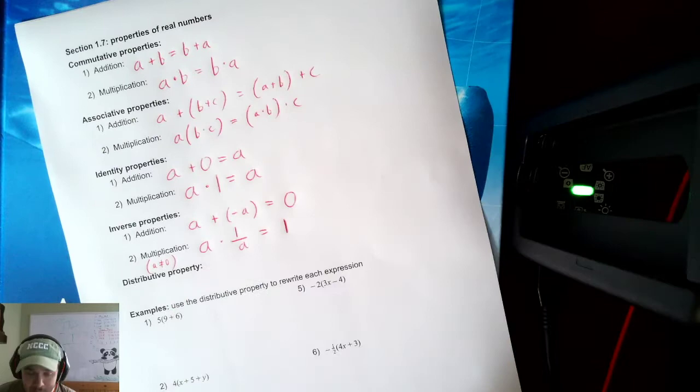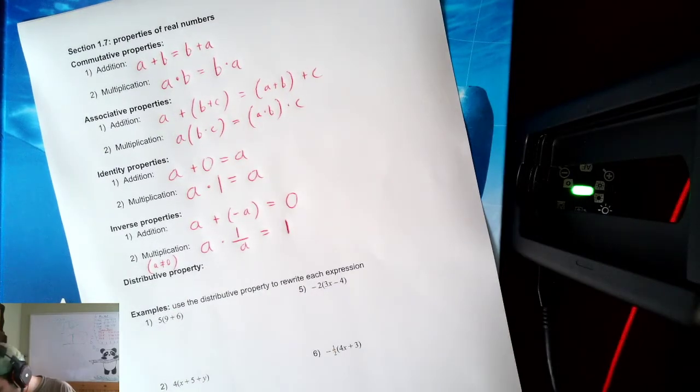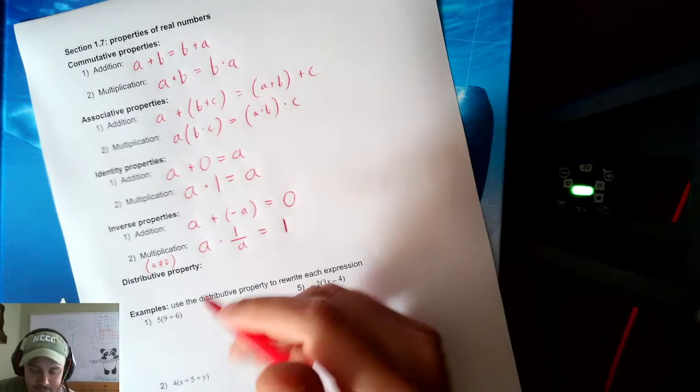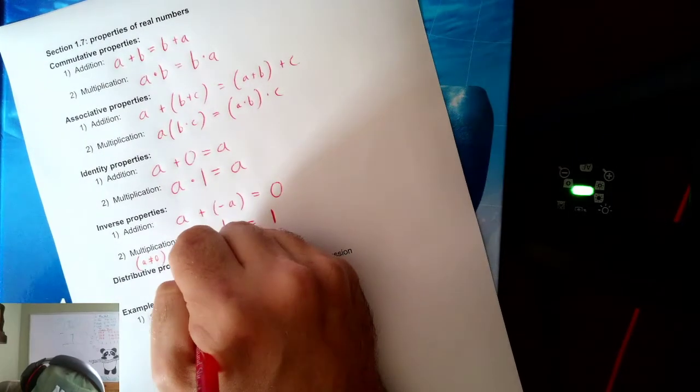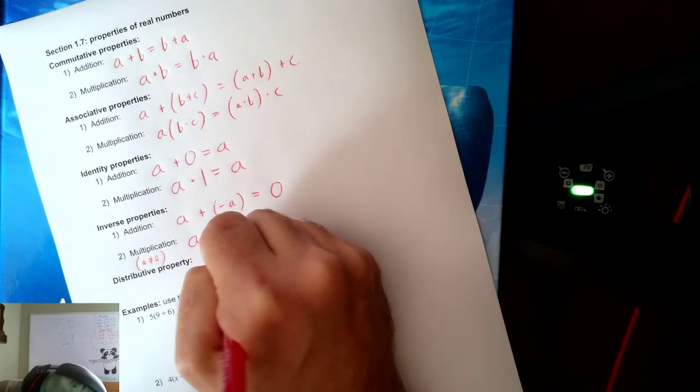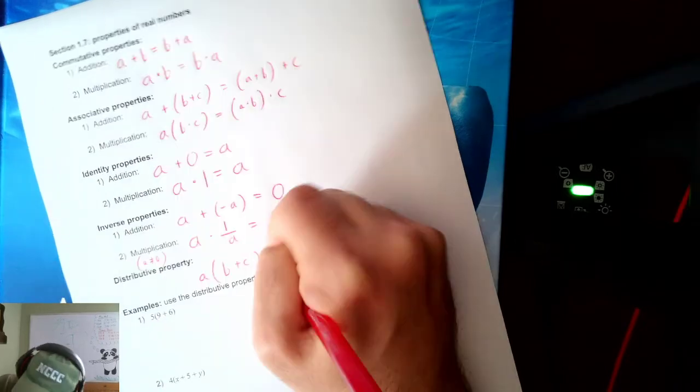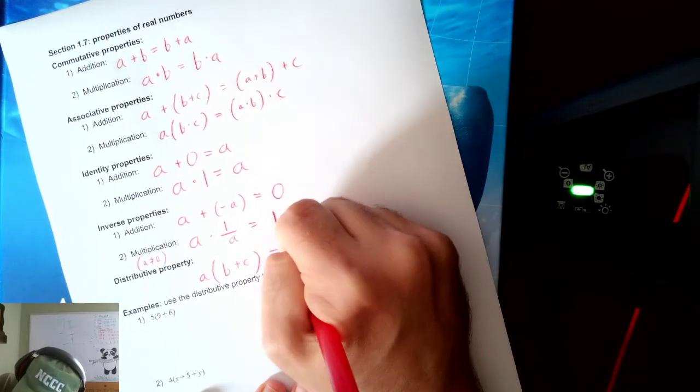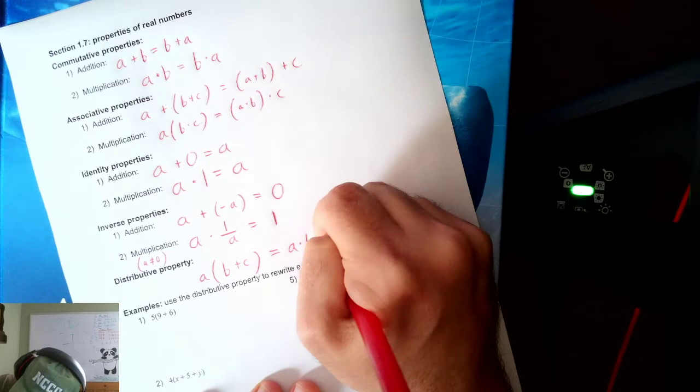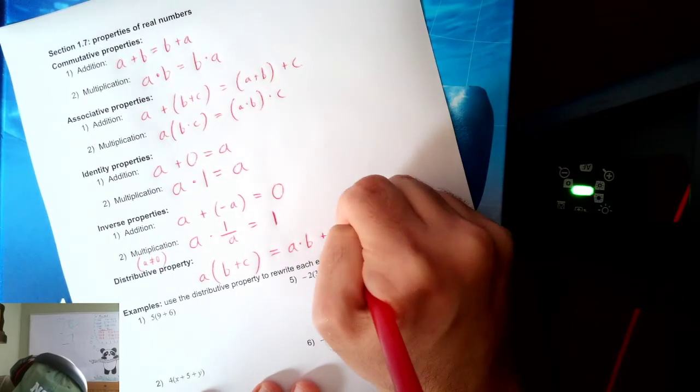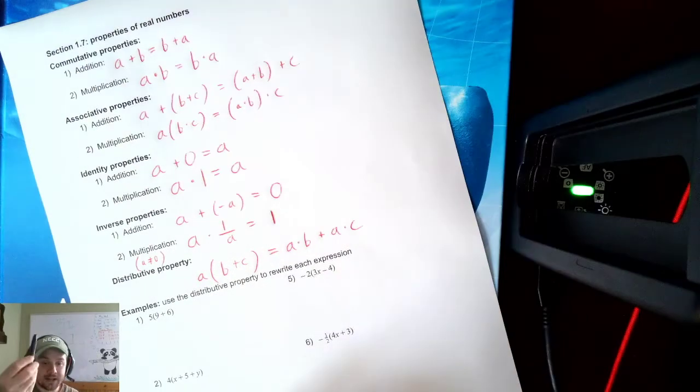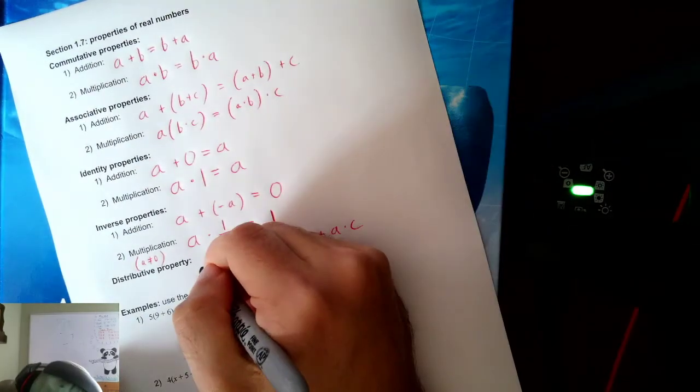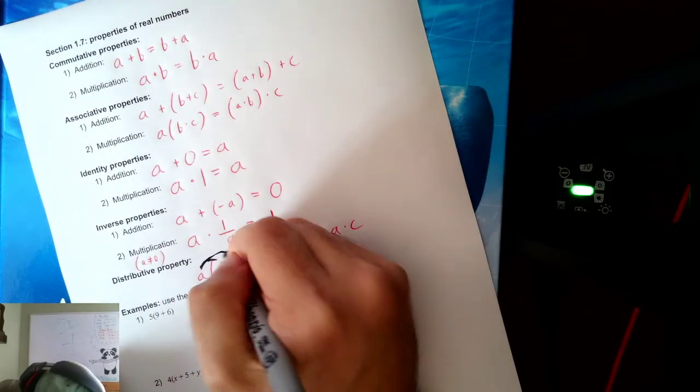Then we've got the first property that combines multiple operations. We have the distributive property. A times B plus C is the same thing as A times B plus A times C. I can, let's grab another colored pen here.